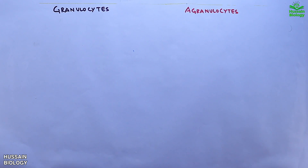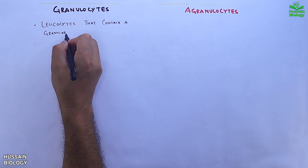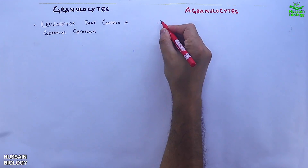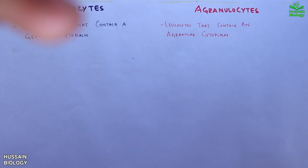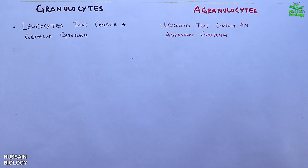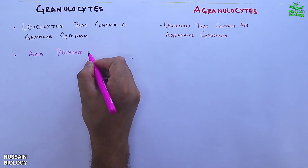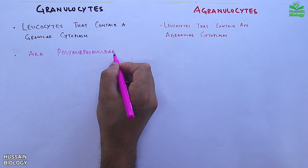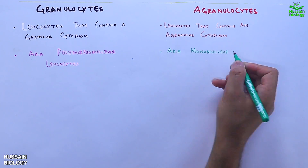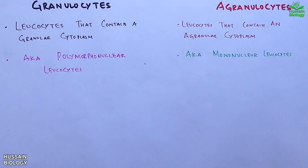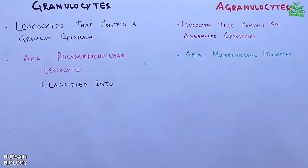Comparing granulocytes and agranulocytes: granulocytes are leukocytes that contain granules in their cytoplasm, whereas agranulocytes are leukocytes that do not contain any granules — they have agranular cytoplasm. Granulocytes are also known as polymorphonuclear leukocytes, whereas agranulocytes are also known as mononuclear leukocytes.